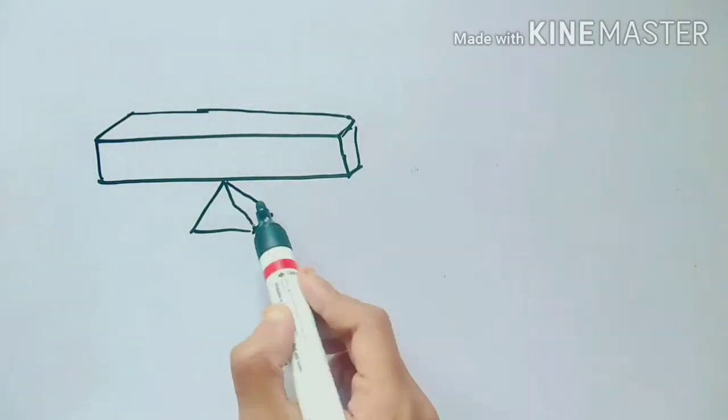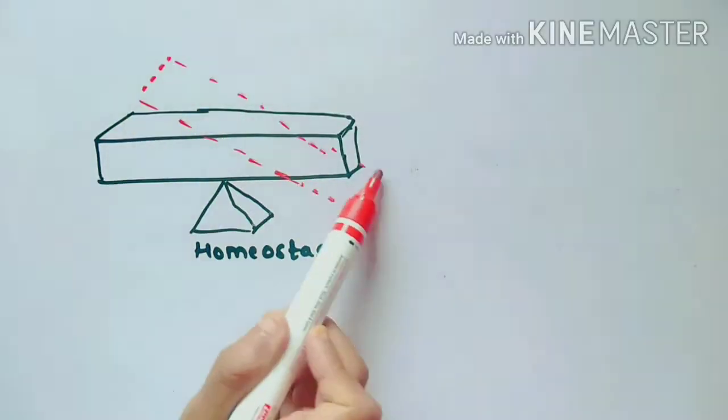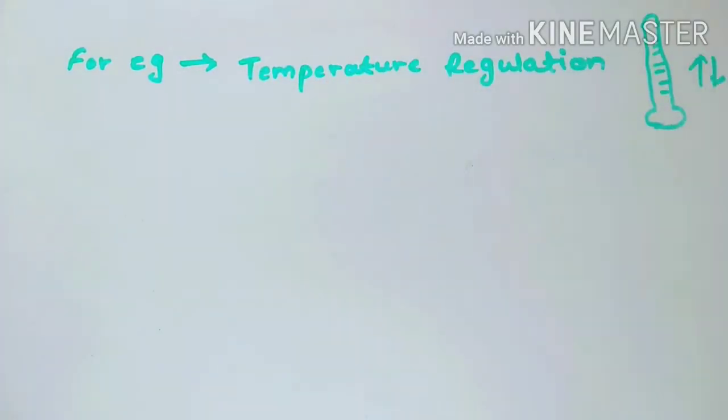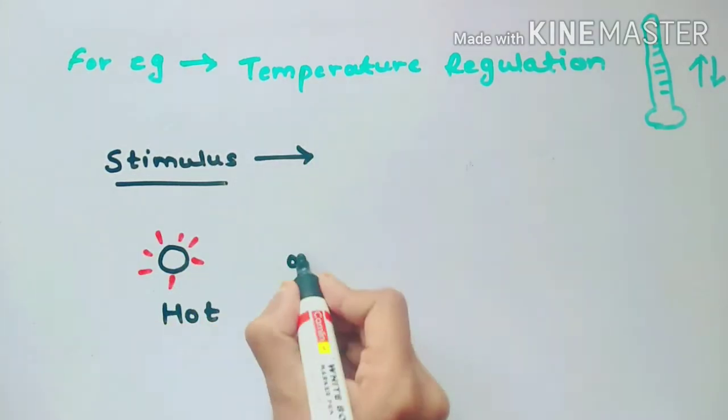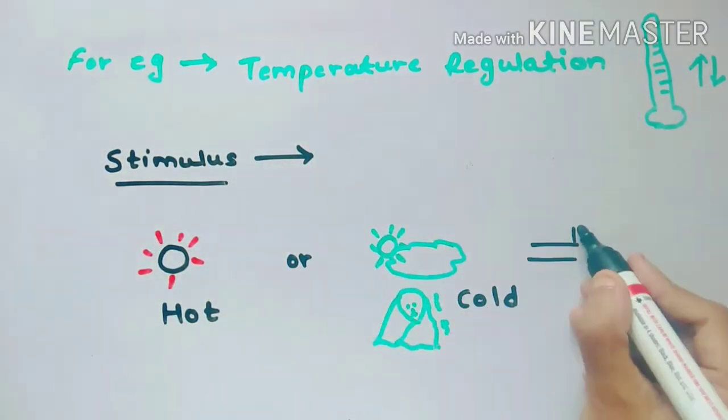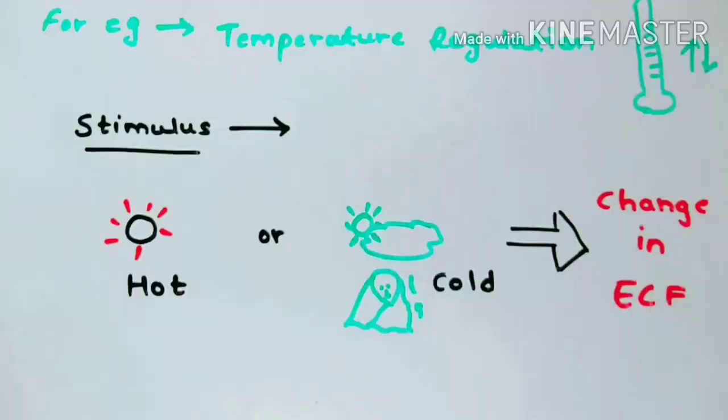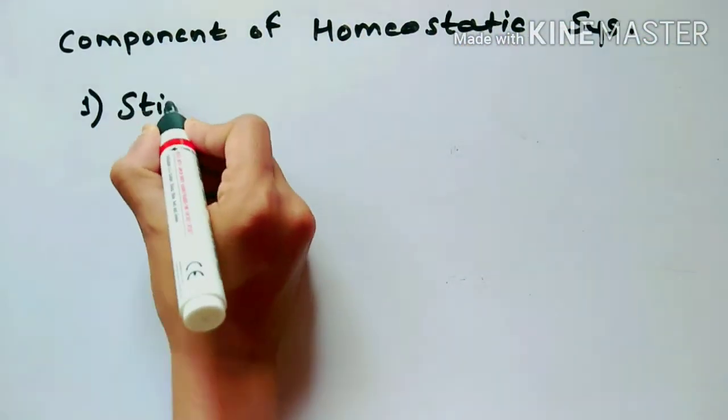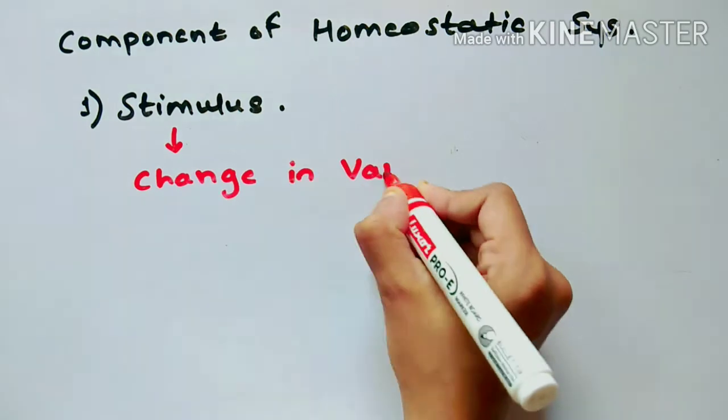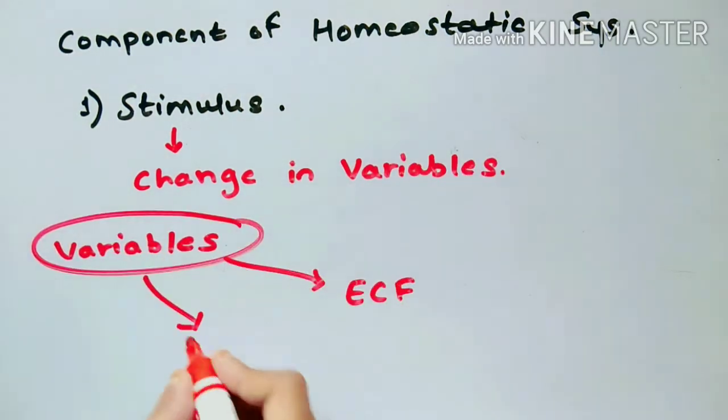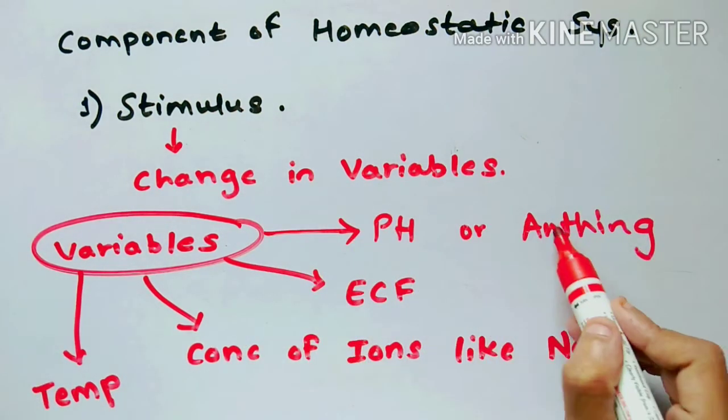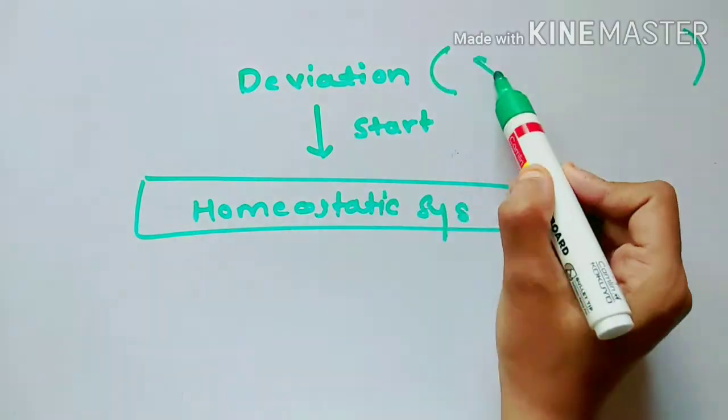The homeostatic system will operate only when there is deviation, and this deviation is created by the stimulus. For example, when we look at temperature regulation, the change in the environment, whether it is cool or hot, brings change in our body's ECF and operates homeostatic mechanism. So stimulus is something that results in change within the system involving variables. Variables can be anything that causes change in the ECF, maybe concentration or anything else. Deviation in the variable initiates the homeostatic mechanism.